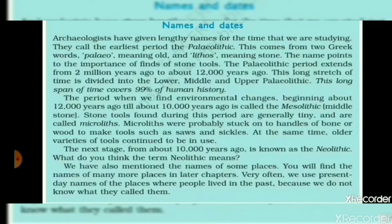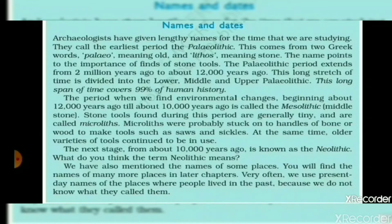Neolithic is the third period. We have also mentioned the names of some places; you will find the names of many more places in later chapters. Very often we use present-day names for places where people lived in the past, because we do not know what they called them.